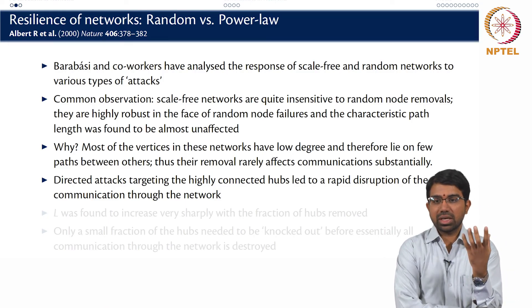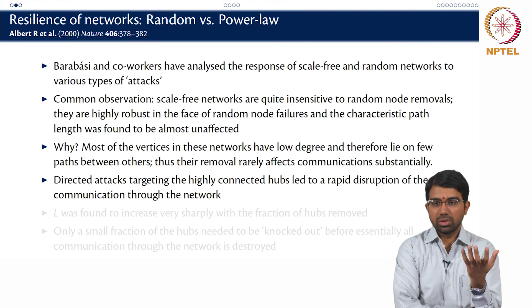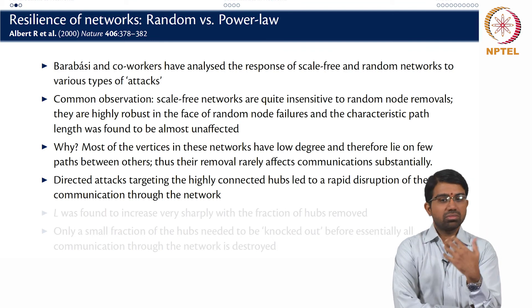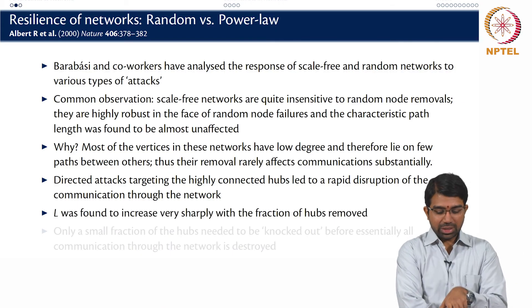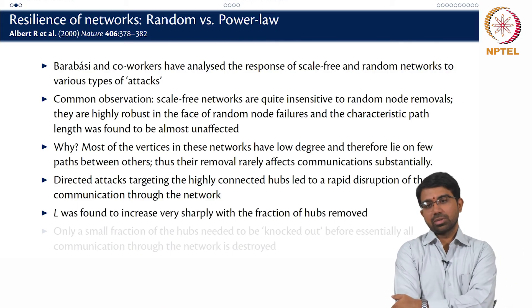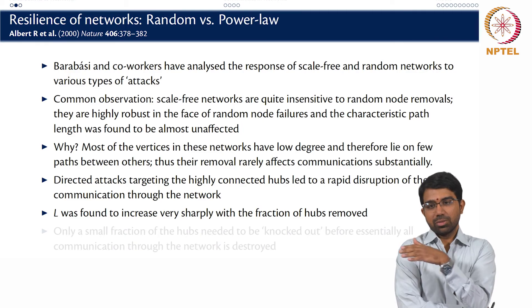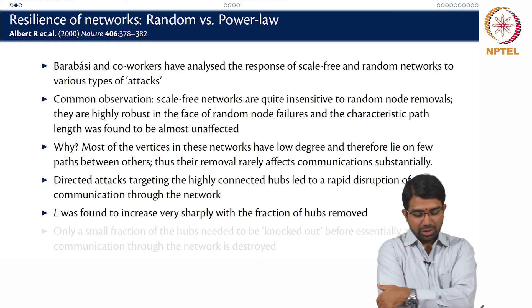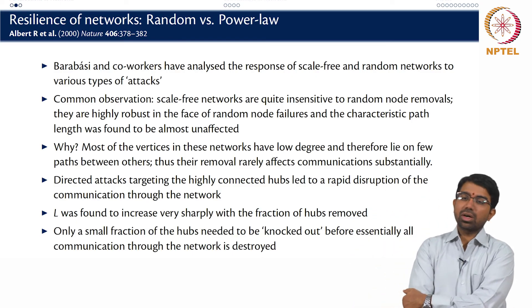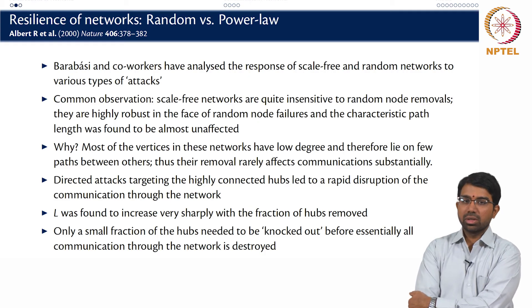You can run a simulation, create a scale-free network, start knocking out nodes at random and then plot characteristic path length. So L was found to increase very sharply with the fraction of hubs removed. As you remove the hubs, it increases very fast and then you will have a drop when the whole network gets fragmented. You needed only to knock out a small fraction of the hubs before literally killing the entire network.